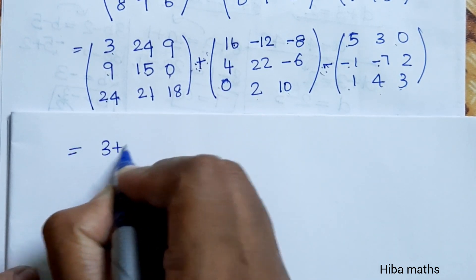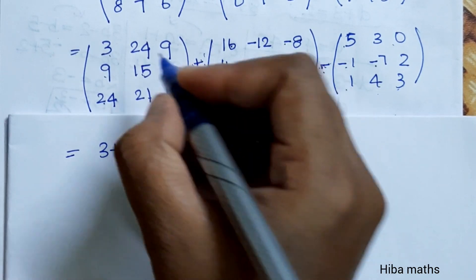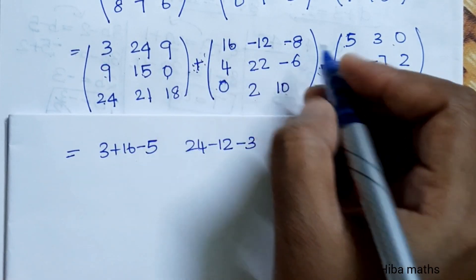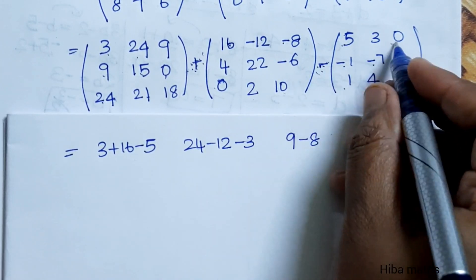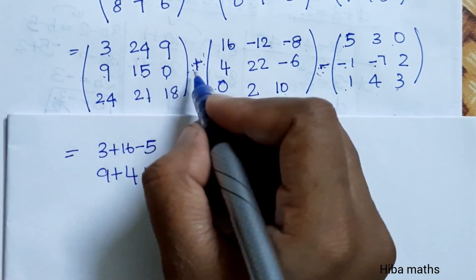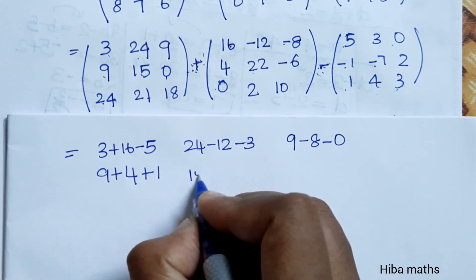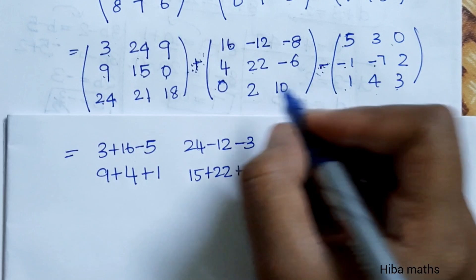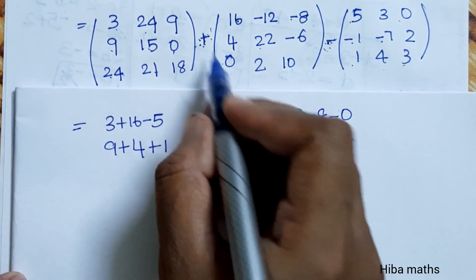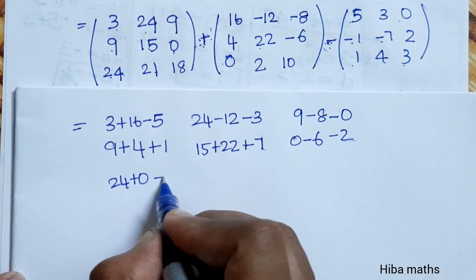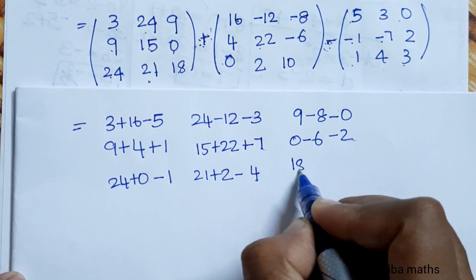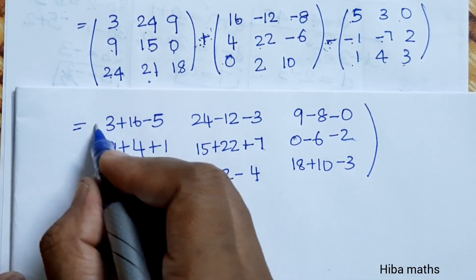Now combining: 3 plus 16 gives the first element. Then 24, plus into minus gives minus 12, minus into plus gives minus 3, add the 9. Plus into minus gives minus 8, 15 plus 22 gives 37, plus 7. Add 0 minus 6. Add minus minus 2, double minus gives minus 2. Add 24 plus 0. Add minus minus 1, add 21 plus 2. Add minus minus 4, add 18 plus 10. Last line minus 3.